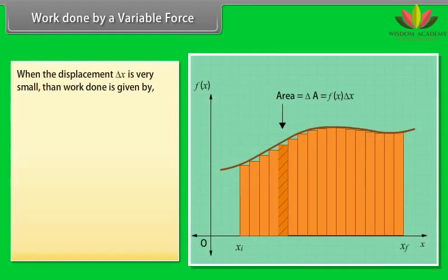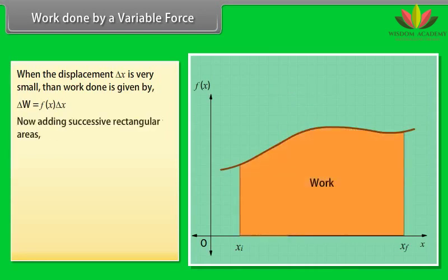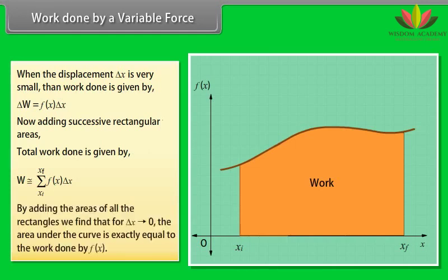Work done by a variable force. When the displacement delta x is very small, then work done is given by delta w is equal to fx delta x. Now adding successive rectangular areas, total work done by w is approximately equals to summation from initial position xi to final position xf of product of fx and delta x. By adding the areas of all the rectangles, we find that for delta x tends to 0, the area under the curve is exactly equal to the work done by fx.